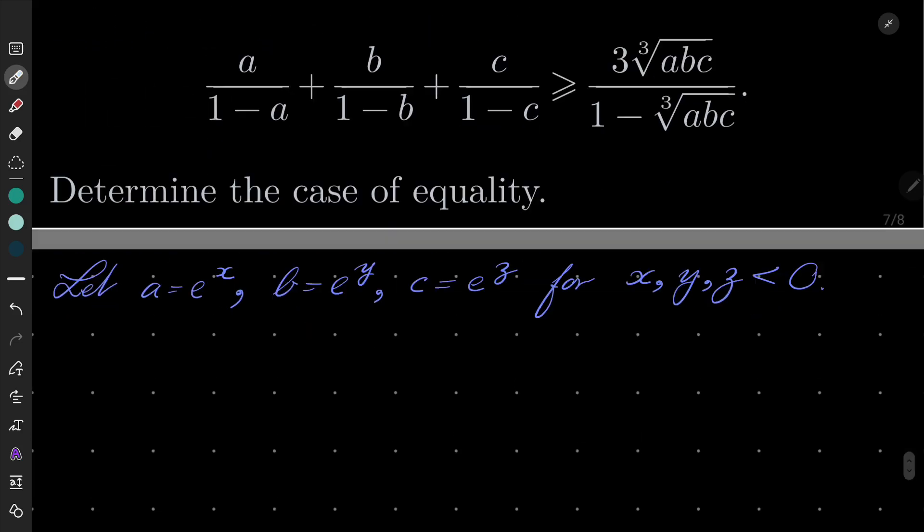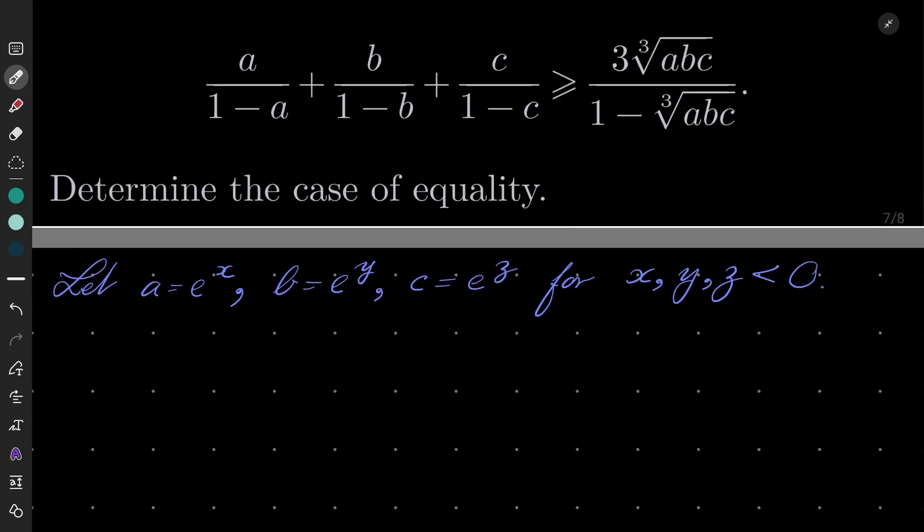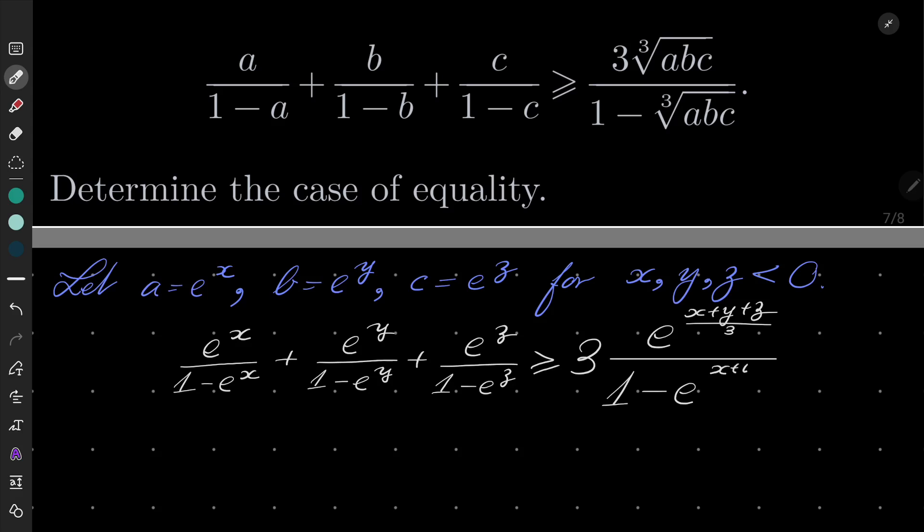Okay, and now let's put it into our inequality. So we have the following: e to the power of x over 1 minus e to the power of x plus e to the power of y over 1 minus e to the power of y plus e to the power of z over 1 minus e to the power of z is greater than or equal three times e to the power of x plus y plus z over 3, over 1 minus e to the power of x plus y plus z over 3. By manipulations, you know, when we multiply e to the power of x times e to the power of y, we are adding exponents and so on, obvious.